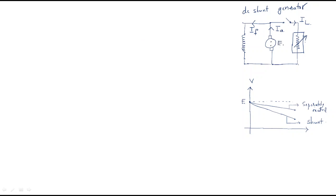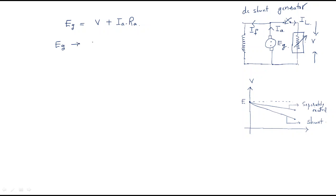The generated EMF is represented as EG. The armature consists of some resistance RA. When the load is connected, the voltage V is developed at the terminals. The equation is: EG = V + IA × RA, where IA × RA is the armature resistance drop.